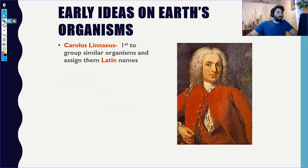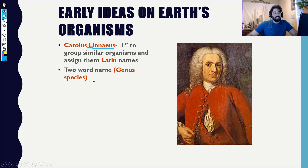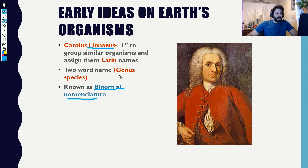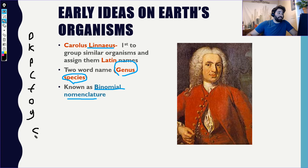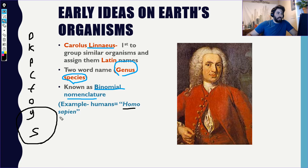The next person who helped with this whole system is Linnaeus. What Linnaeus did is he was the first one to group similar organisms together and assign them certain names. These names we call binomial nomenclature — the genus and the species of a creature. We talked about the levels of organization: domain, kingdom, phylum, class, family, order, genus, and species. When we use binomial nomenclature, we use just the genus and the species. For humans, our genus is Homo and our species is sapien, so we're called Homo sapien.